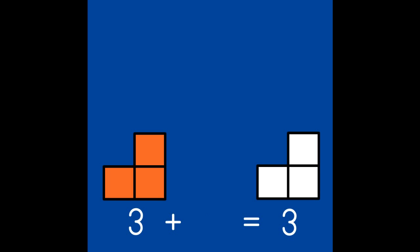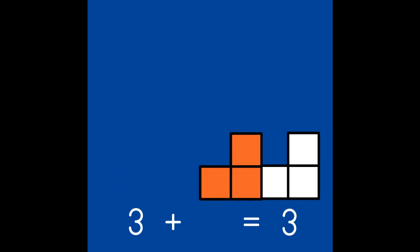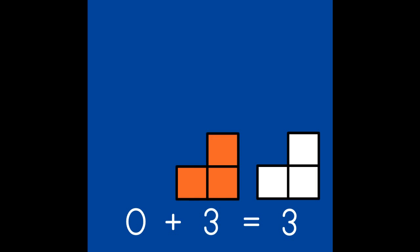Our last partners to make 3 are sort of tricky. That's because one of the partners is 0. 0 means nothing. Let's put the number 3 in our puzzle, and we can see that 3 needs 0 to make 3. We can switch the partners and put 0 in the puzzle first and see that we need 3. 0 and 3 are the same as 3.